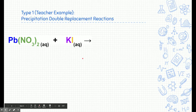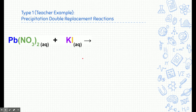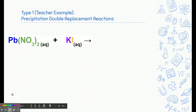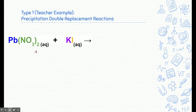Let's apply this to a double replacement reaction — this is a teacher example. Here are two reactants: lead(II) nitrate and potassium iodide. Lead is a +2 charge because it's attached to nitrate, which is -1, and there are two nitrates giving -2, so lead must be +2. Potassium is +1 (first column) and iodine is -1 (last column).